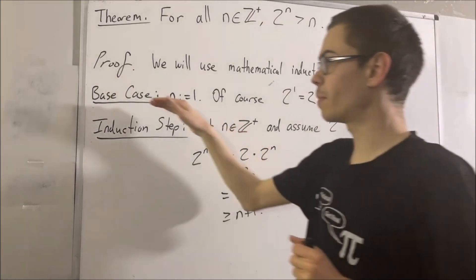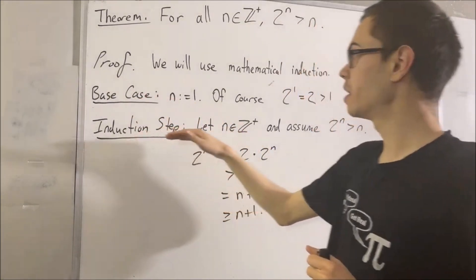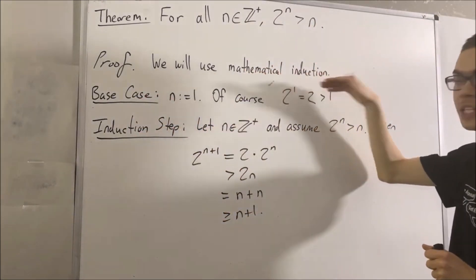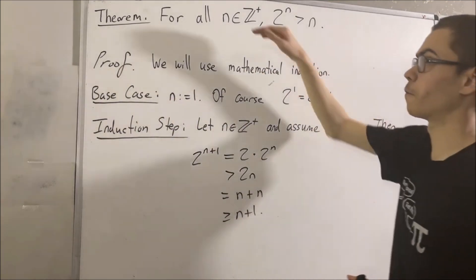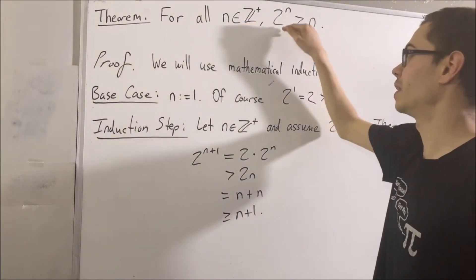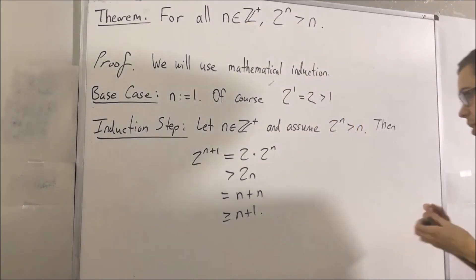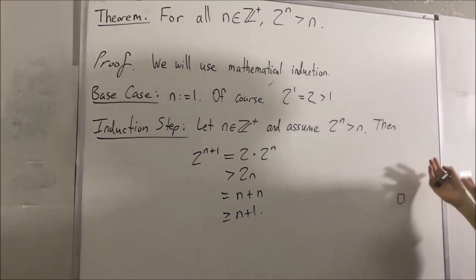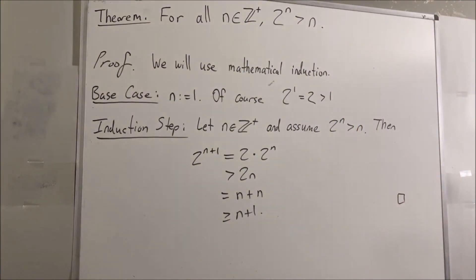So because we've proven the base case and the induction step, this means our mathematical induction is complete. We have proven for all positive integers n, 2 to the n is greater than n. So this completes the proof. And that's pretty much it for this video.